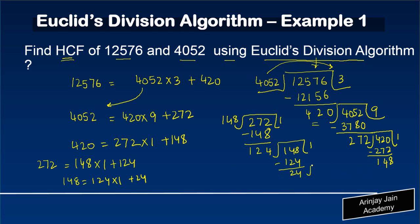Now I divide 124 by 24. Five times 24 gives 120, so the remainder is 4. This can be written as: 124 = 24 × 5 + 4.